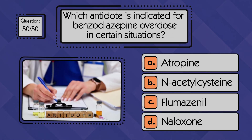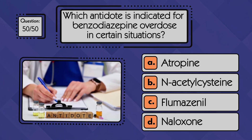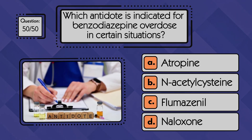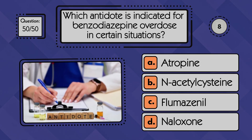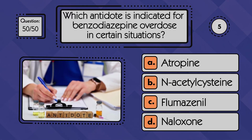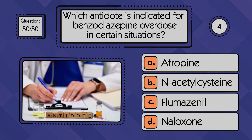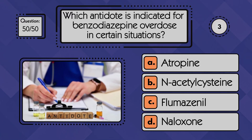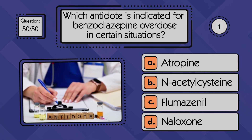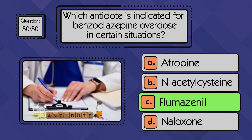Which antidote is indicated for benzodiazepine overdose in certain situations? The answer is flumazenil.